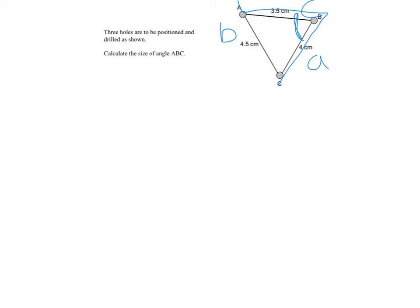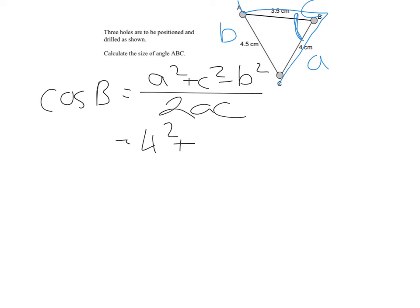So now cos B is equal to A squared plus C squared minus B squared over 2AC. And I'm just going to fill in all of that information. So I'm going to have 4 squared plus 3.5 squared minus 4.5 squared, all divided by 2 times 3.5 times 4.